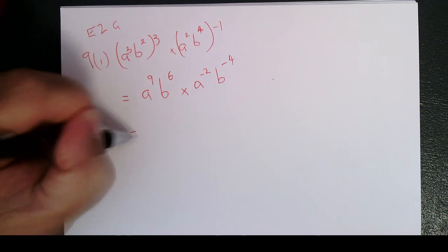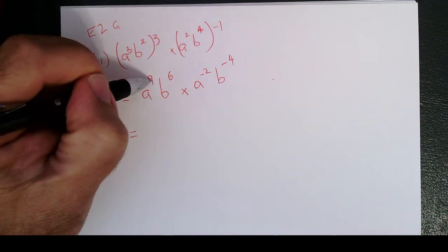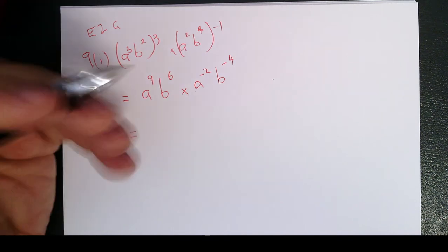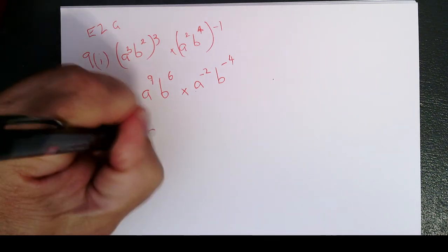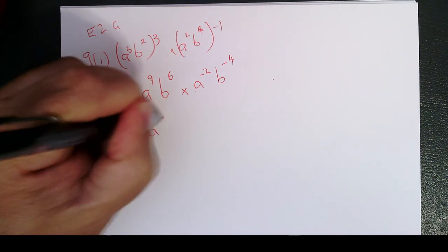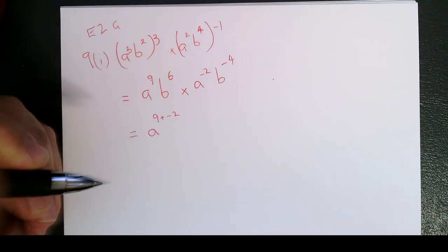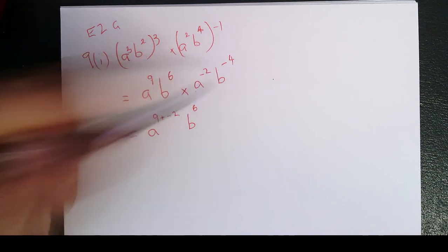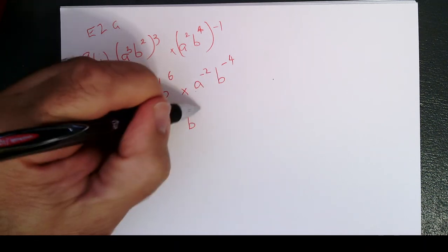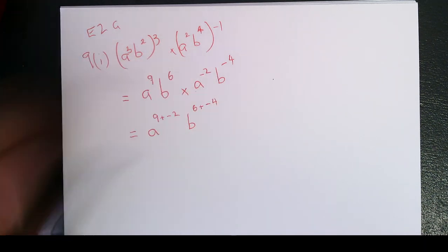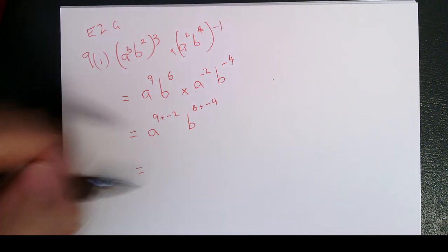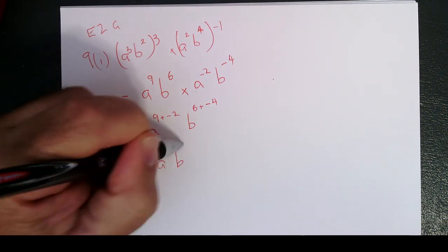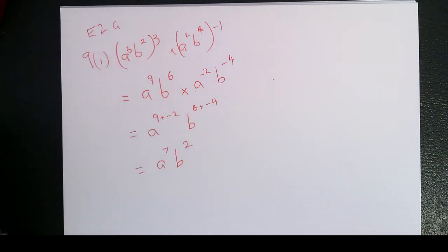So now, a to the power of 9 times a to the power of negative 2. We add powers, so it's going to be a to the power of 9 plus negative 2. And then b to the power of 6 times b to the power of negative 4. We add the powers, so 6 plus negative 4. That's going to be a to the power of 7, b to the power of 2. And that's it.